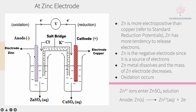Zinc is a negative electrode since it is a source of electrons. The zinc here has more tendency to release electrons, so this zinc will release electrons to become zinc ions. This zinc electrode becomes the negative electrode since it is a source of electrons. The zinc metal dissolves and the mass of the zinc electrode decreases, producing zinc ions and releasing electrons. Thus oxidation occurs.